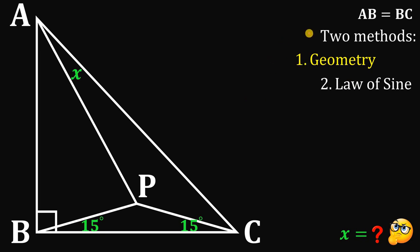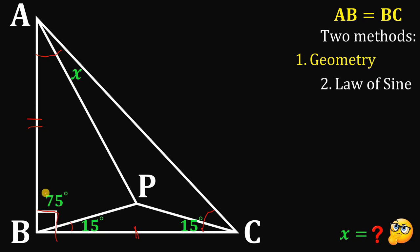To answer this using geometry, we need to utilize the given that side AB must equal side BC. Since this angle is 15 degrees and we know this is 90 degrees, the other angle must equal 75 degrees. Angle C is 45 degrees, so with 15 degrees accounted for, the remaining angle must be 30 degrees. Angle A is also 45 degrees. We have angle X, so the remaining angle must equal 45 degrees minus X. The triangle ABC is an isosceles right triangle, so we can make a square out of it.